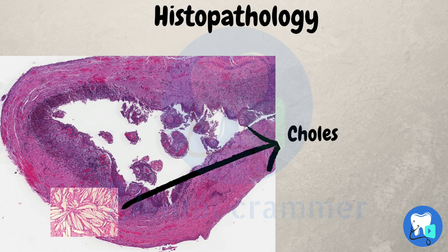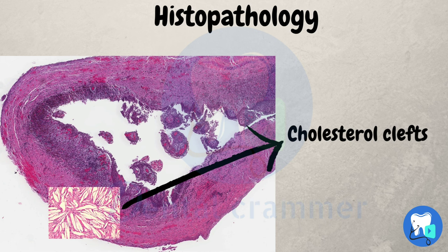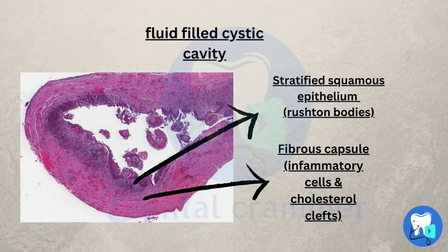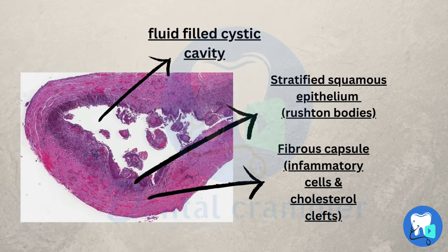To review the histopathology: it has a fluid-filled cavity, epithelium which is stratified squamous having the rests in bodies, fibrous capsules consisting of inflammatory cells and cholesterol clefts.